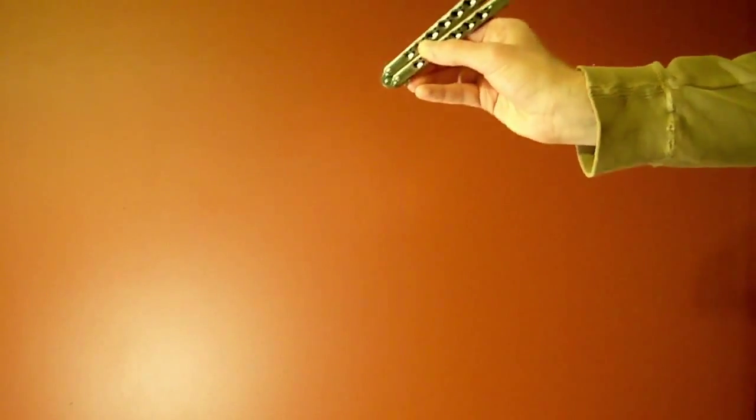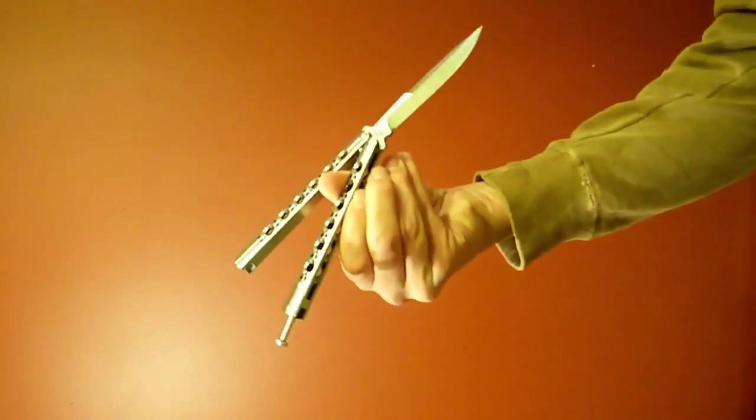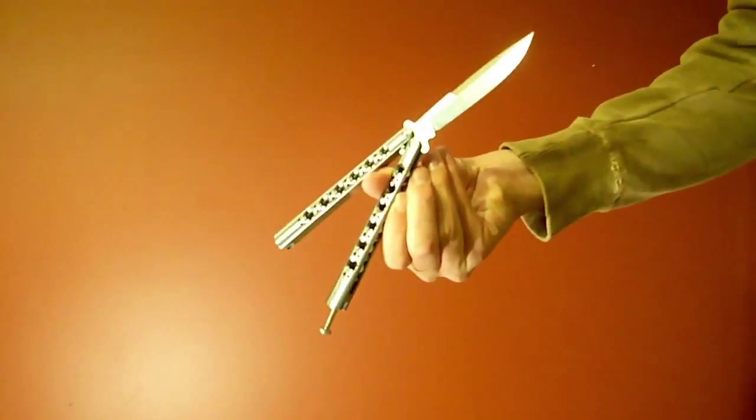For this move, you want to be making a horizontal movement like that. And you want to just swing the safe handle on the back of your thumb. Just like that.